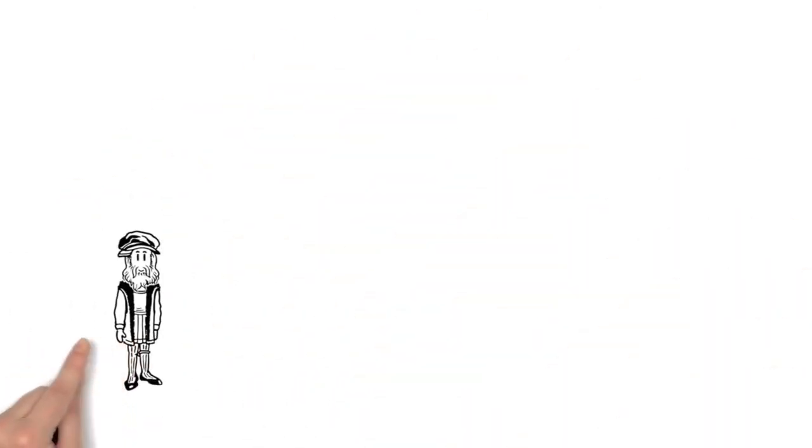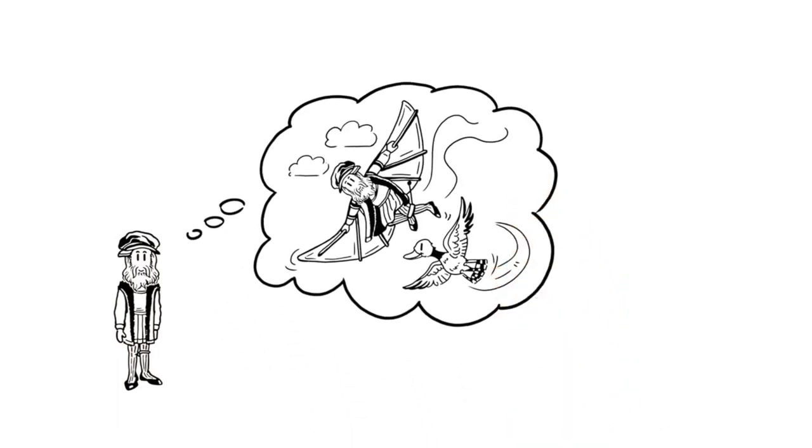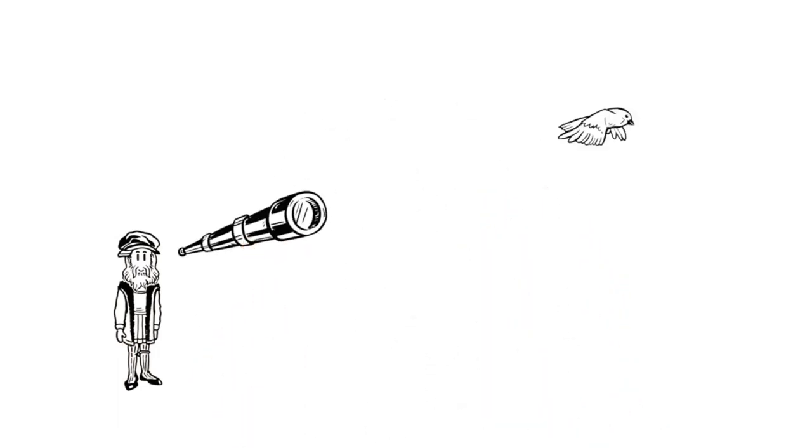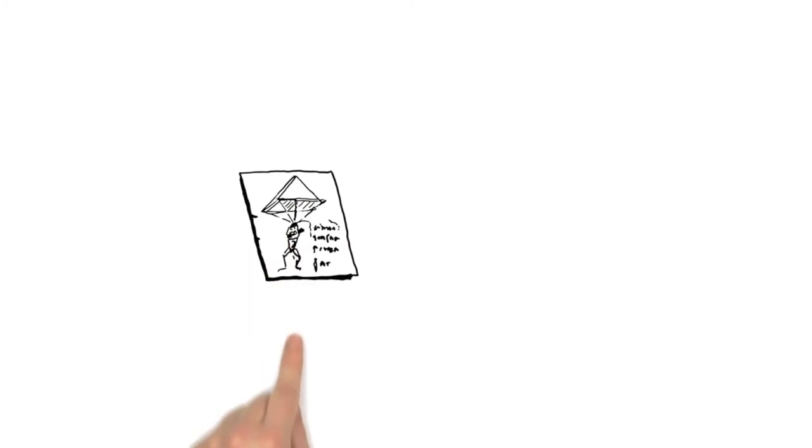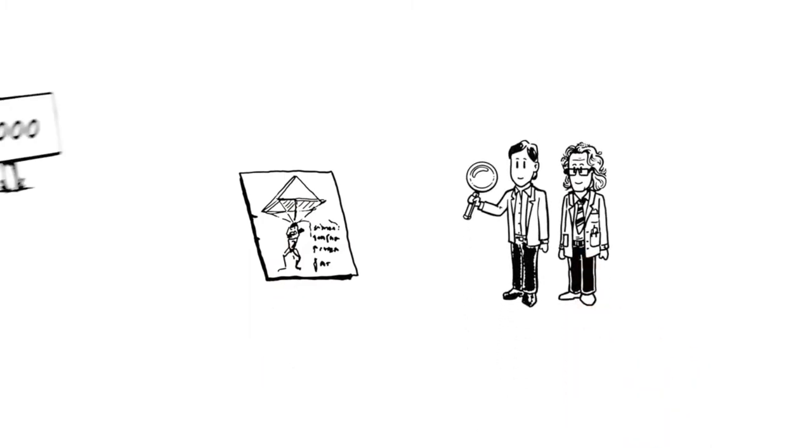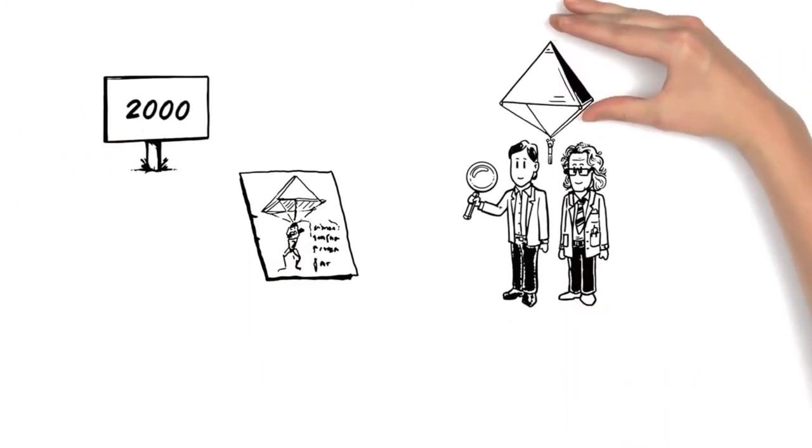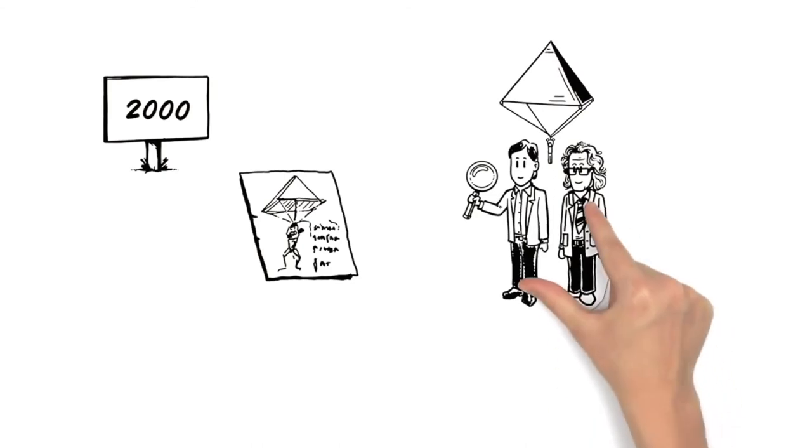One of Leonardo's greatest dreams was to fly. By observing the movements of birds, he invented the very first flying machine. A parachute was later assembled by scientists in the year 2000 using his original design. And it worked.